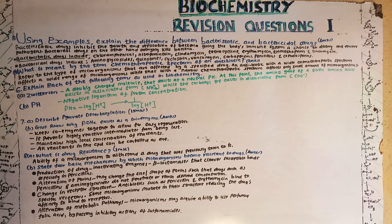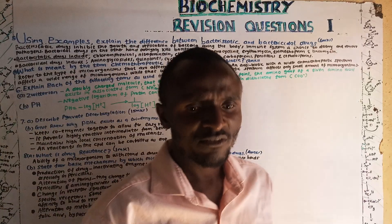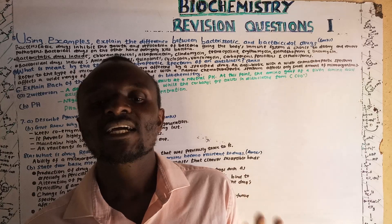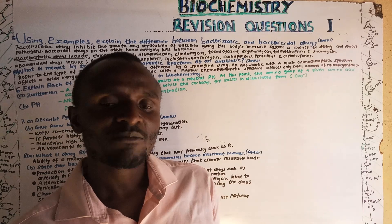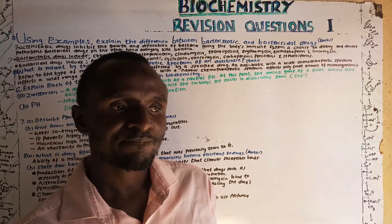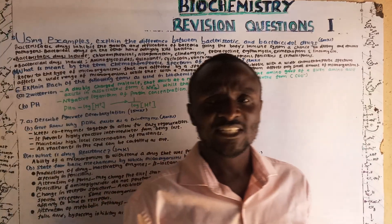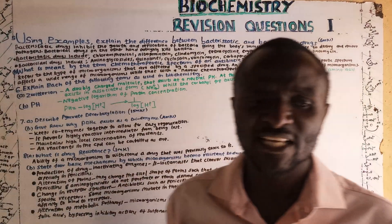Bactericidal — 'cidal' means to kill — so bactericidal drugs outright kill microorganisms. Examples of bacteriostatic drugs include chloramphenicol, nitrofurantoin, and clindamycin, while bactericidal drugs include quinolones and vancomycin.